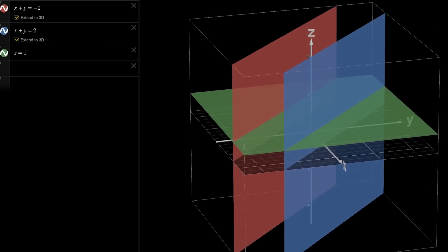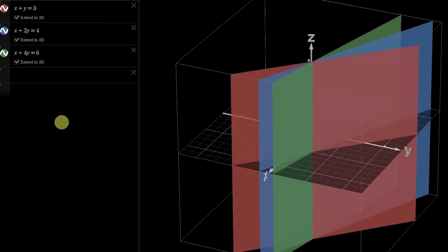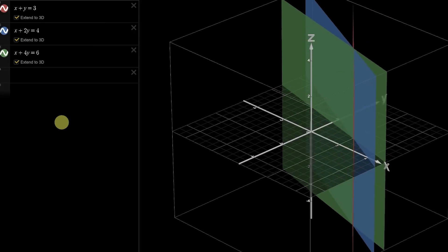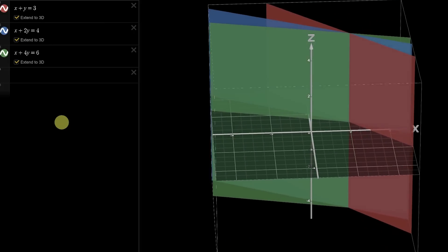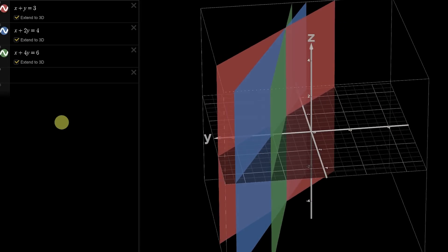Again, two of these planes might have been parallel, in which case there would be no points of triple intersection, or it could be that they were oriented so that there was a whole line of triple intersection, or even just the same plane three times over, which would mean the entire plane was points of triple intersection.